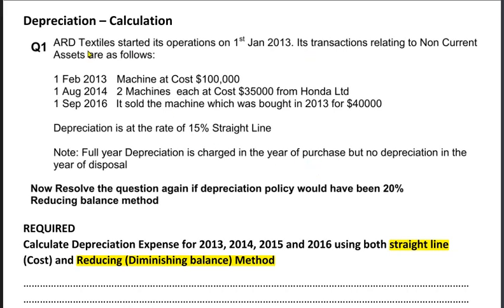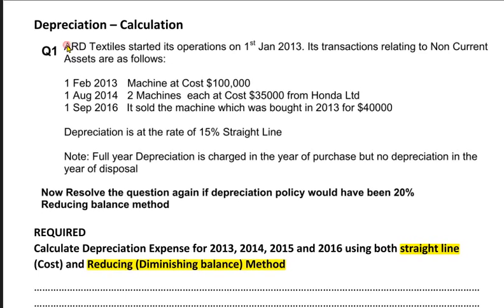This example question is about ARD Textiles. ARD Textiles started its operations on January 2013, meaning it's a new business not in existence before 2013. Its transactions relating to non-current assets are as follows: in the first year, on 1st February, a machine was bought for 100,000. Then on 1st August 2014, two machines were bought, each at a cost of 35,000, totalling 70,000, purchased on credit from Honda Limited.